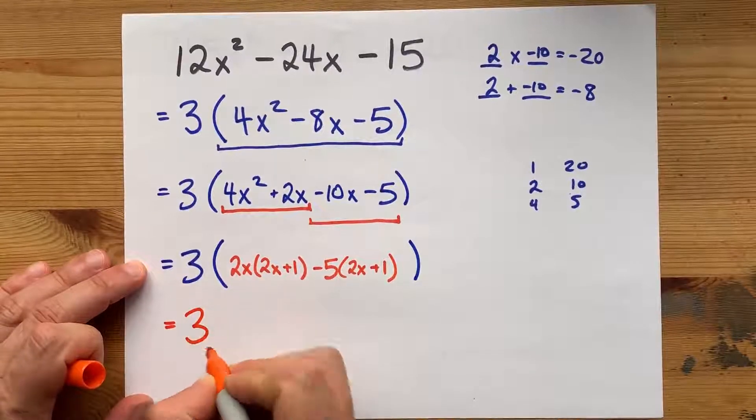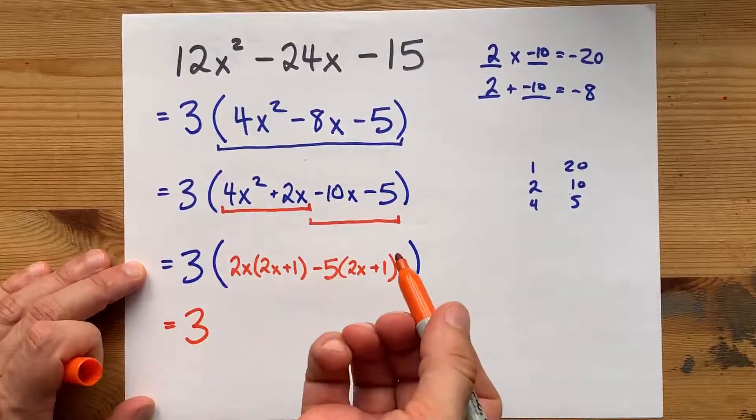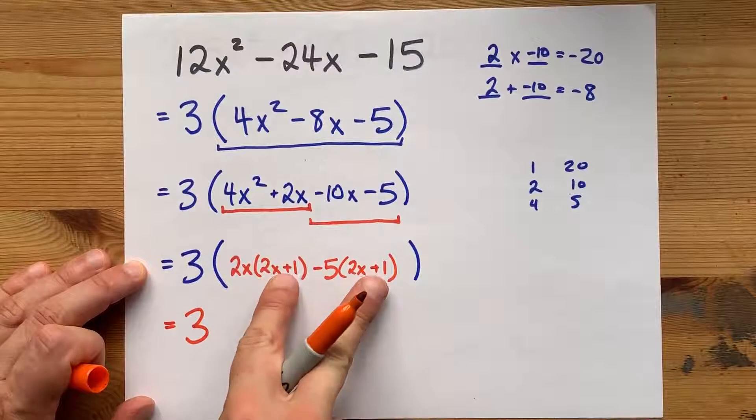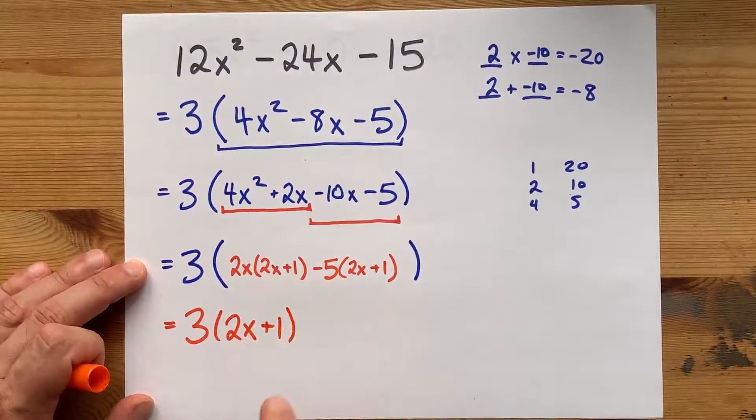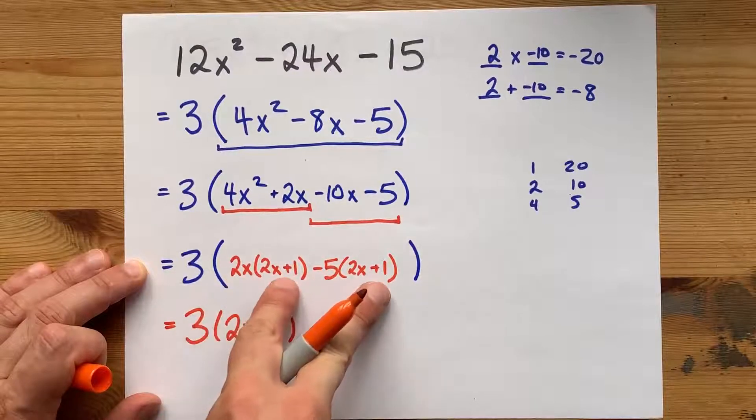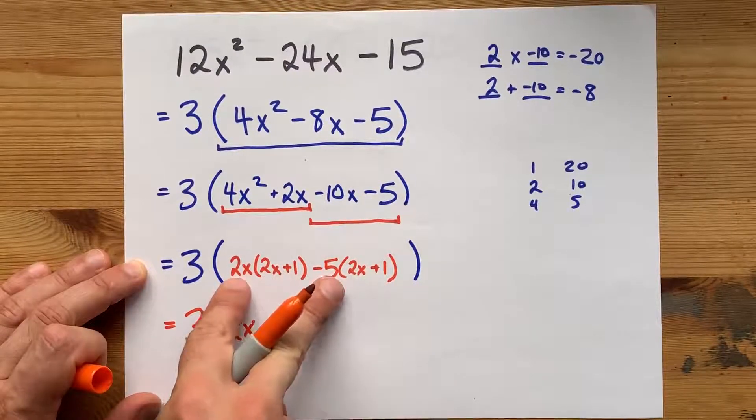And so you've got your 3. That still has to stay up front. Your common bracket gets written next. And the leftovers, the things that are not in those common brackets.